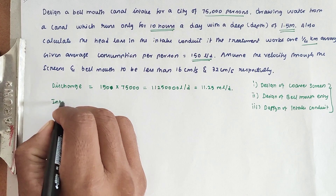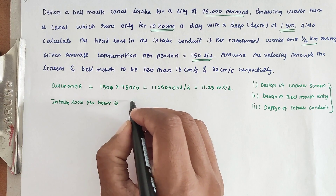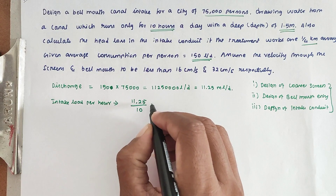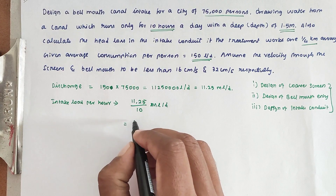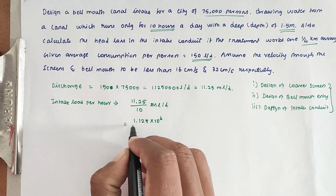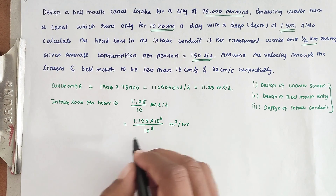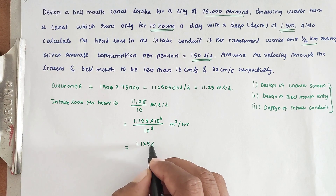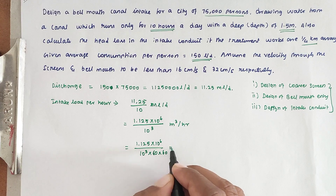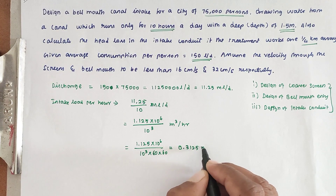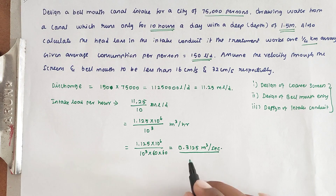Intake load per hour: 11.25 divided by 10 hours of working equals 1.125 million liters per hour. Converting to meter cube per second: 1.125 × 10⁶ divided by 10³ divided by 3600 equals 0.3125 m³/s. So the intake load is 0.3125 m³/s, and we have to design for this load.